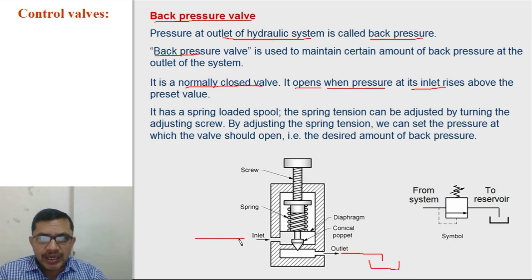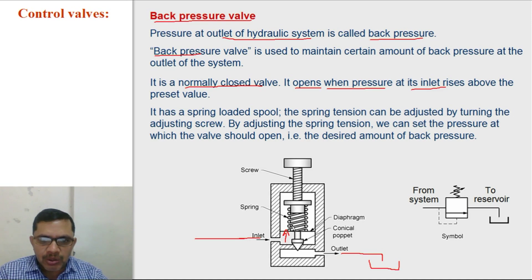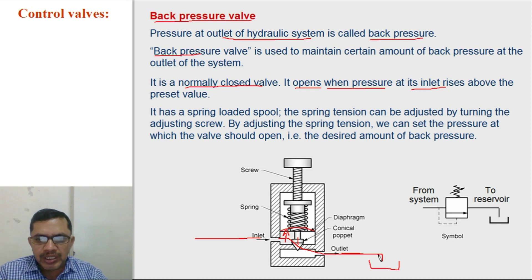If the pressure at the exit of the system increases above the preset value — that is the spring tension — then the diaphragm deflects in the upper direction and the conical poppet will move upward, making a passage for oil to flow to the oil reservoir tank. This is the functioning of the back pressure valve.